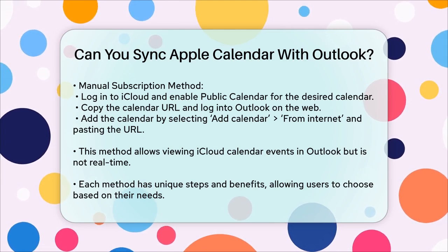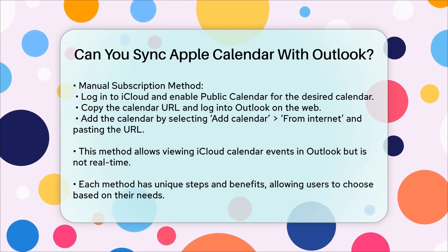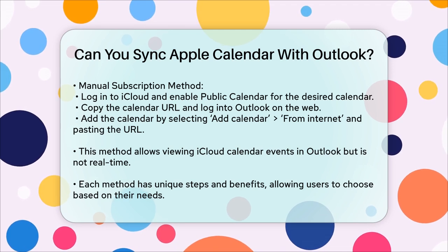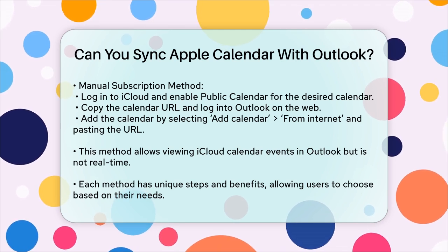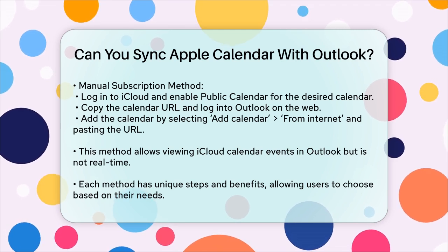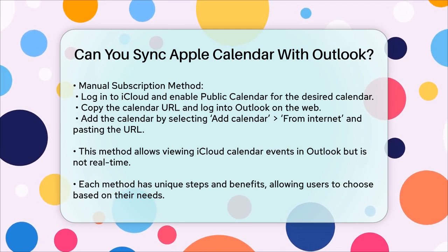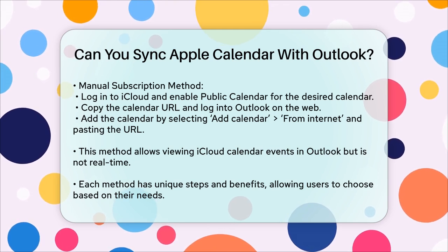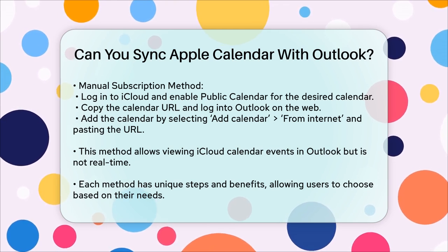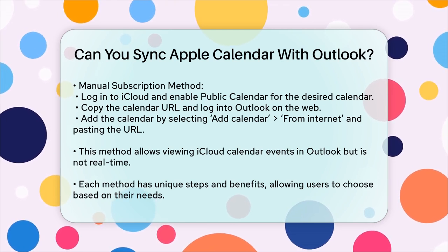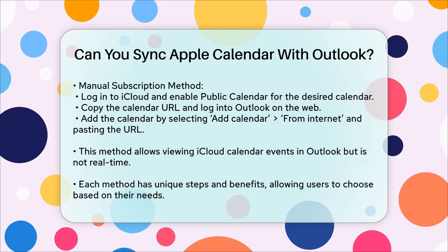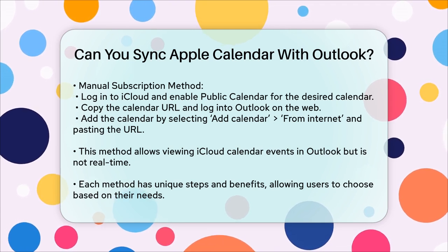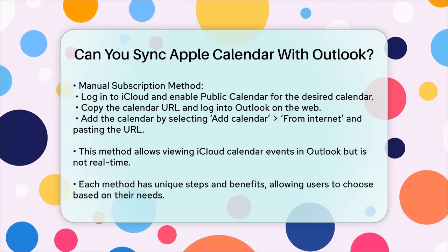In summary, while there isn't a native way to sync Apple Calendar with Outlook directly, you can use the Apple Calendar app, calendar sync tools like OneCal, or the iCloud application to achieve a functional sync. Each method has its own steps and benefits, so you can choose the one that best fits your needs.